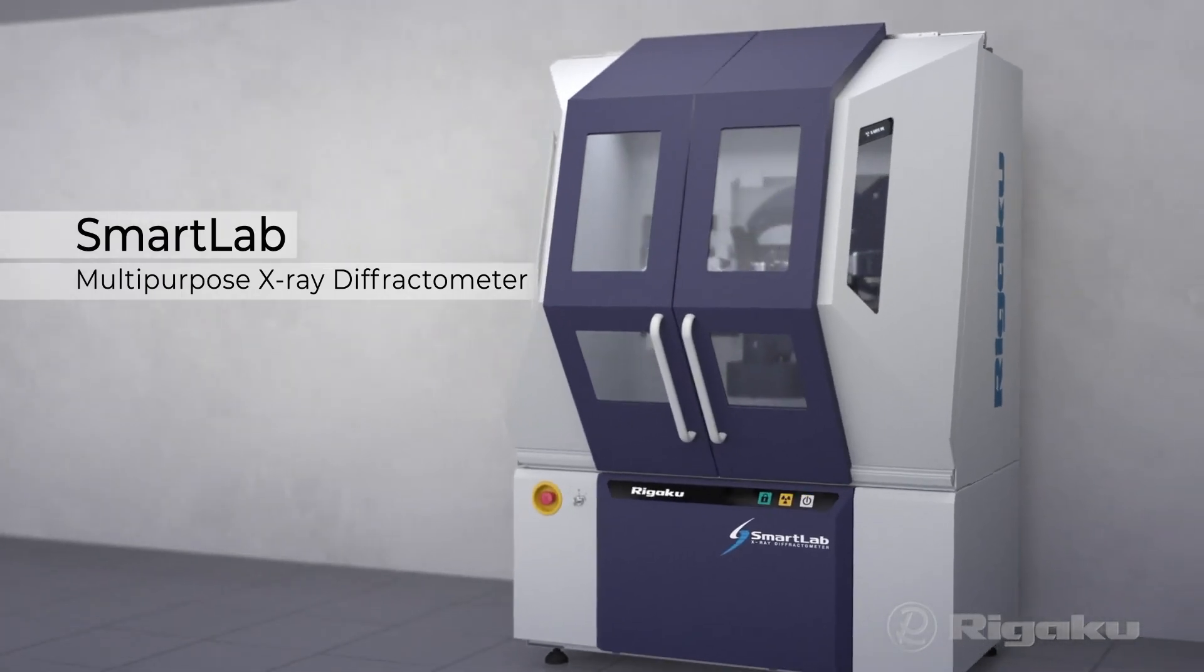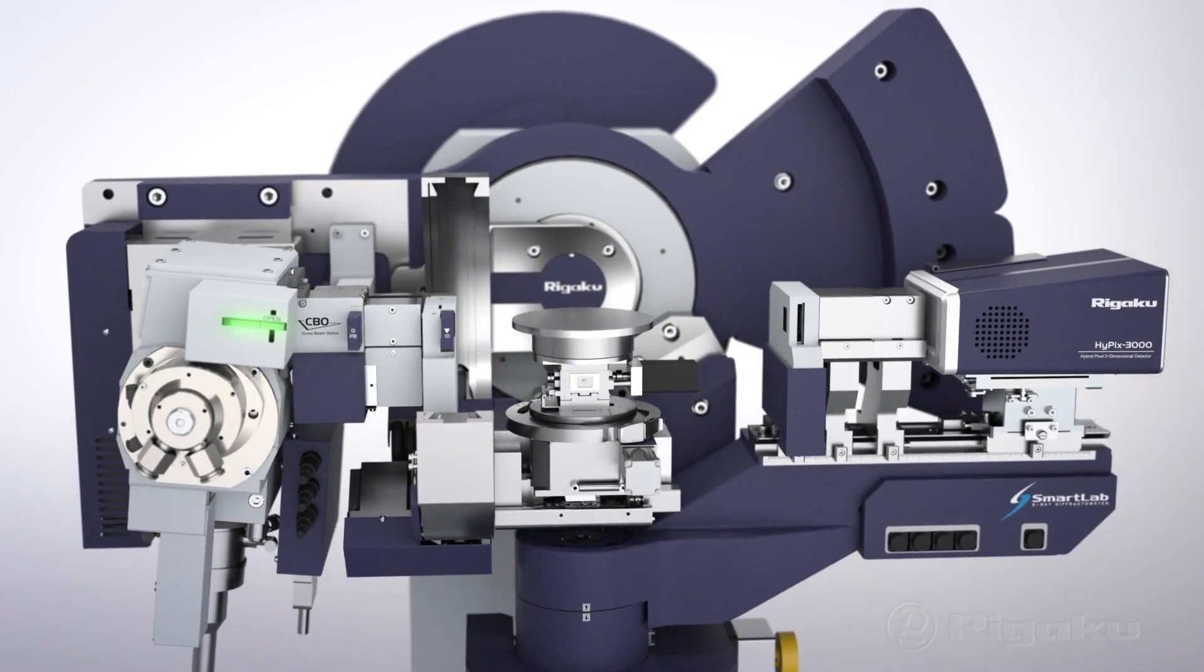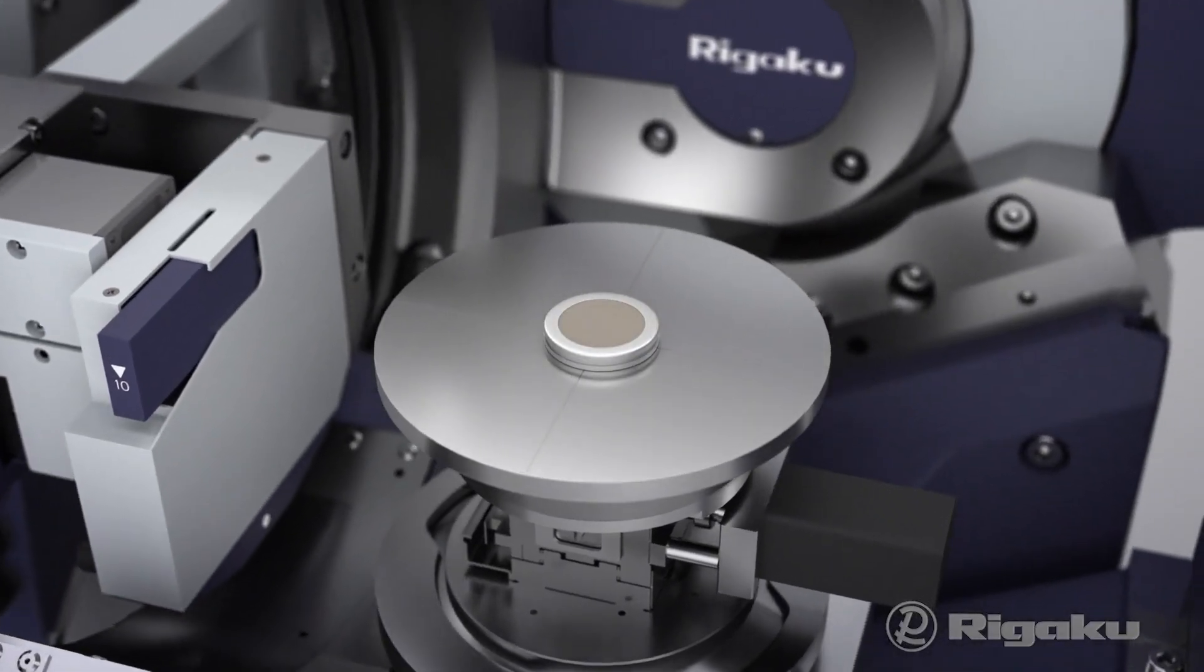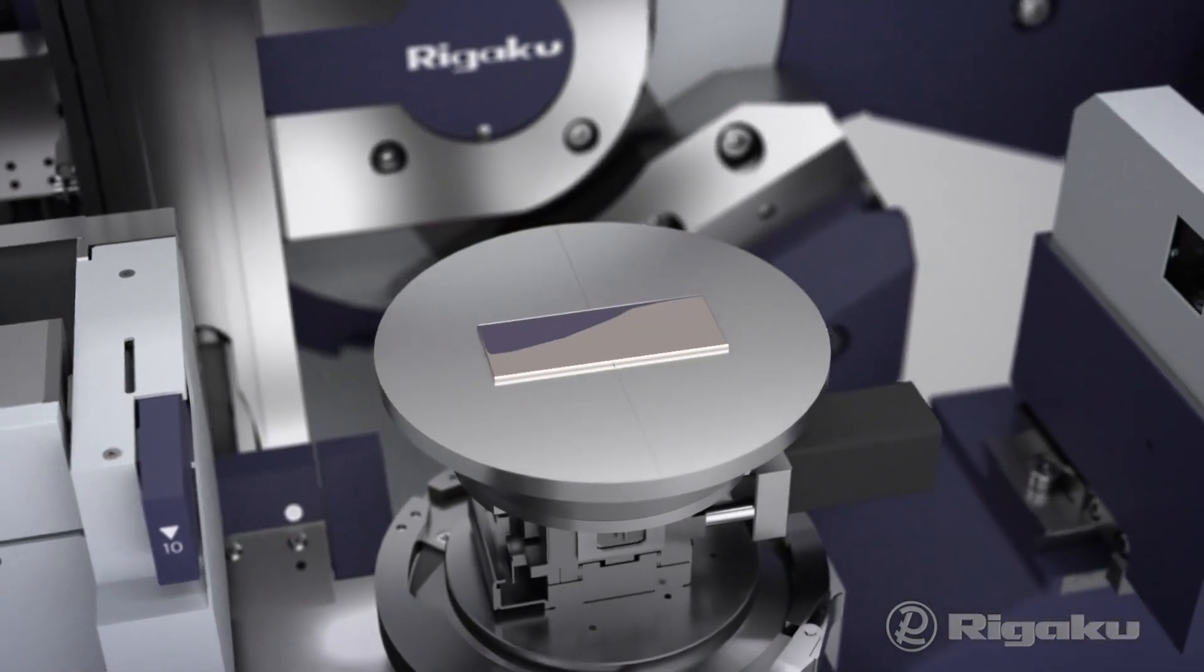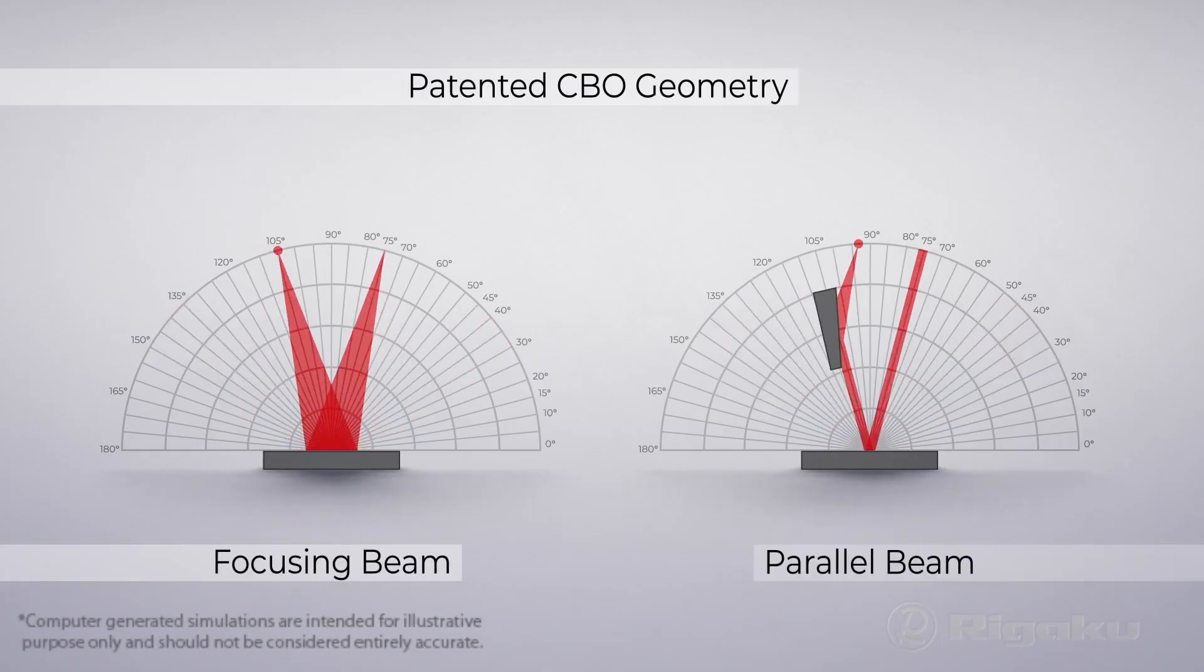RIGAKU SmartLab Crossbeam optics and five-circle goniometer optimizes ease of use and geometrical flexibility. That's what you need in a multipurpose XRD system to measure the most diverse range of samples using either focusing or parallel X-ray beam.